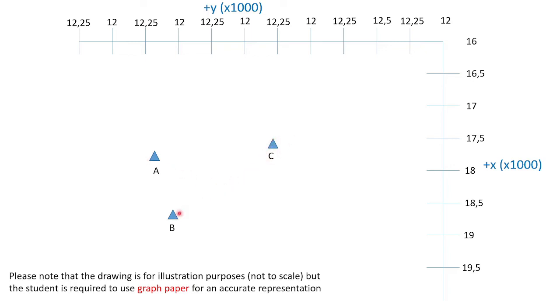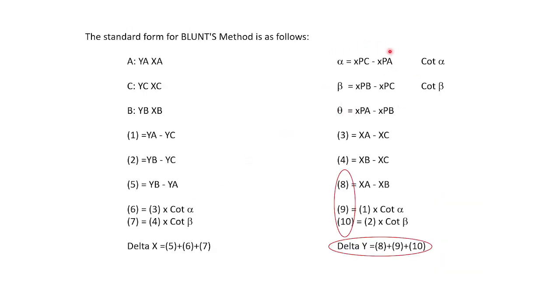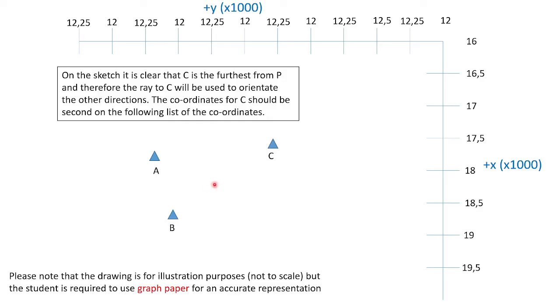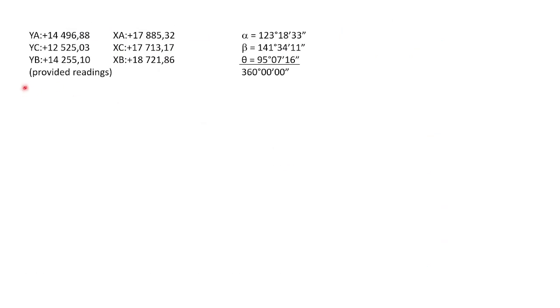So if P is here, and C is your furthest point, C needs to be the second point in the list. So you'll go clockwise from A, C, and then B. Then your alpha will be the angle difference between these two directions. If this is P, your beta will be between the C and the B, and then theta will be between the A and the B. So C is the furthest, so use C as your ray to orientate directions.